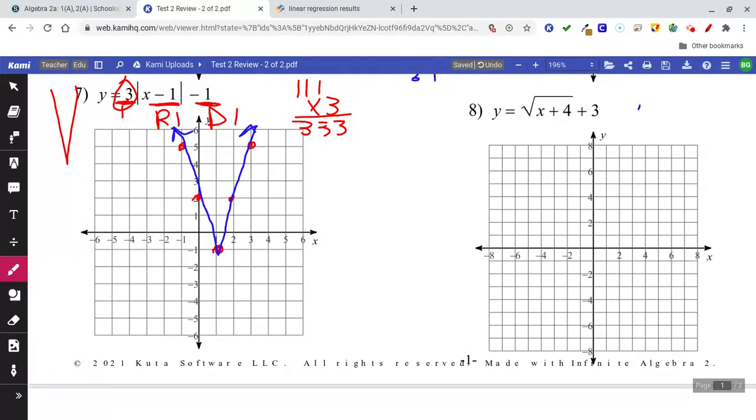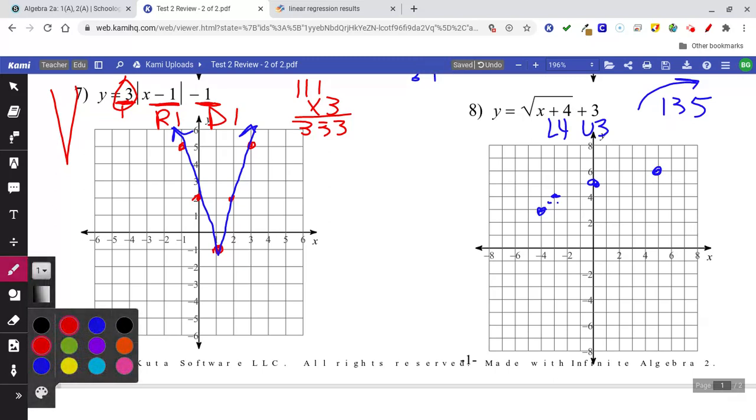Next one's square root. We know it's that shape. We can see left 4, up 3. So left 4, up 3, there's my starting point. It's got a 1, 3, 5 pattern as well, but it's going to the right. So you go over 1 and up 1, and over 3 and up 1, and over 1, 2, 3, 4, 5 and up 1. There's my shape, there's my eyebrow shape. Make sure right here is the last point, do not go across it.